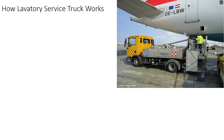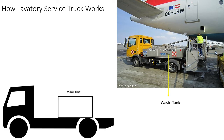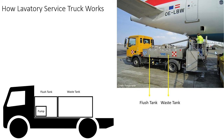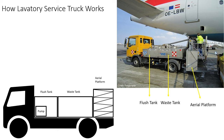A lavatory service truck is simply a collection of components installed over a truck chassis. It has two main tanks: one is the waste tank that stores the waste drained from the aircraft, and the other is the flush tank that stores the disinfectant liquid, often referred to as the blue water, used for rinsing the aircraft's waste tank. The flush tank is installed with a pump used for pumping the blue water into the aircraft's waste tank for rinsing. Most modern lavatory service trucks are equipped with an aerial platform that allows the operator to reach the aircraft lavatory outlet, because on larger aircrafts the outlet is quite high from ground level. Some trucks also have a vacuum system installed with the waste tank that allows faster suction to reduce service time.